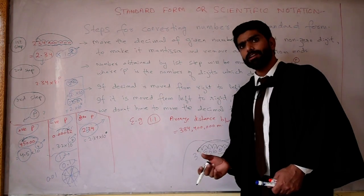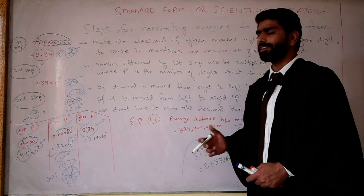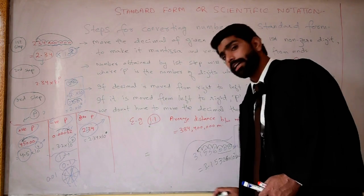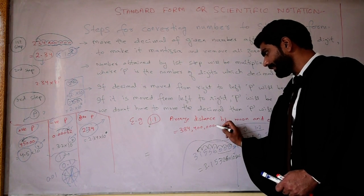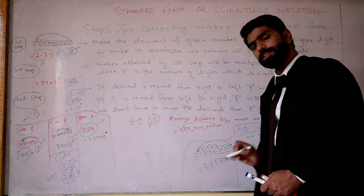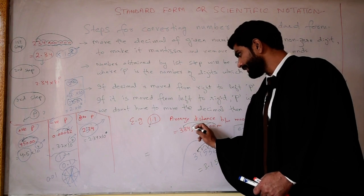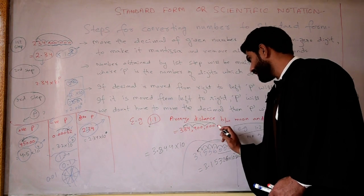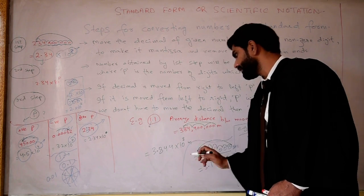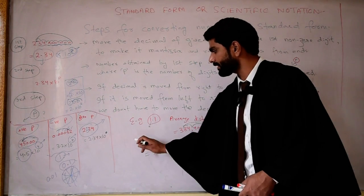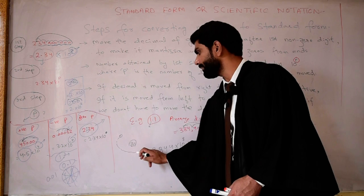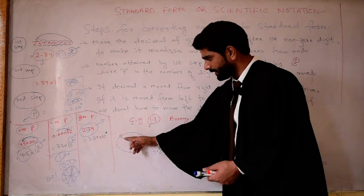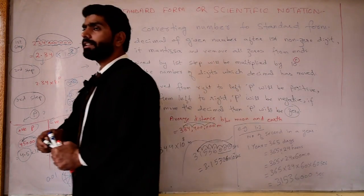A correction: example 1.3 was solved previously, not 1.1. Example 1.1 is being solved now. Converting 384,000,000 meters (average distance between moon and earth) into scientific notation: move the decimal after the first non-zero digit to get 3.84, remove the zeros, count digits moved — 1, 2, 3, 4, 5, 6, 7, 8 — so it is 3.84 × 10⁸ meters. The moon's path is slightly elliptical so the distance varies; this is the average value.